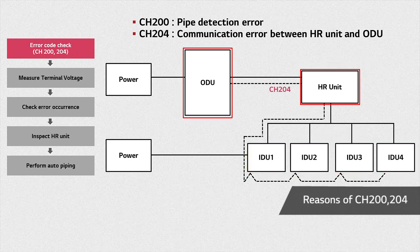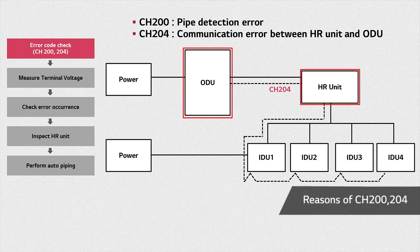On the other hand, error CH204 occurs when there is a communication error between the HR unit and the ODU. The causes for error CH204 include failure in the HR unit's communication cable and power cable, or a malfunction in the HR unit's PCB.